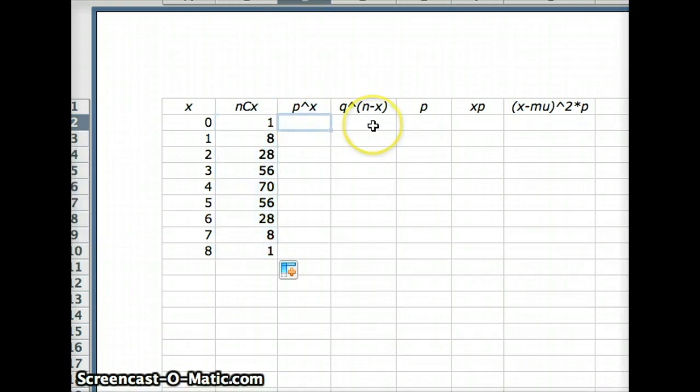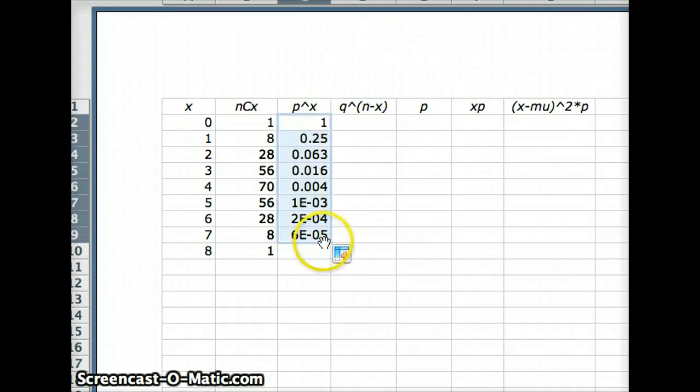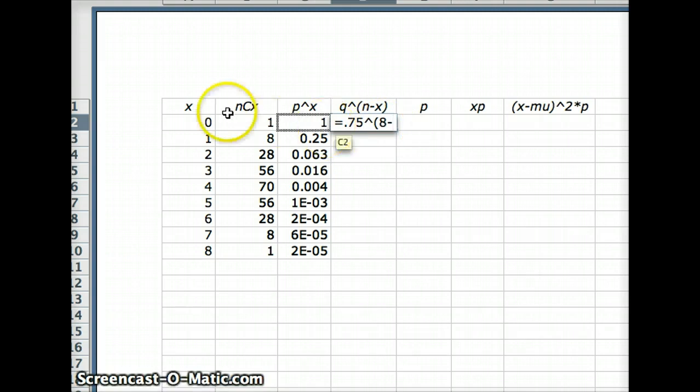p to the x, our probability of success is 0.25. So we want 0.25 to the x power. We'll get 0.25 to the zero, 0.25 to the one, 0.25 to the two, all the way to 0.25 to the eight. Don't be alarmed by these numbers at the bottom - those are just very small numbers using scientific notation. Probability of failure is 0.75, failure is not green. And how many failures do we want? We want n minus x failures. We're going to copy those all the way down.